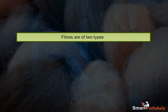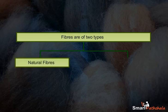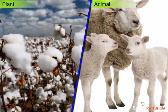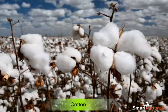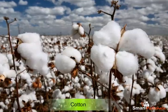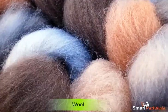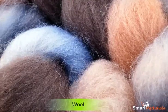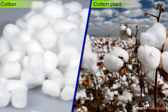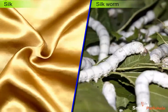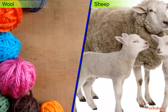Generally, fibers are of two types: natural fibers and synthetic fibers. Natural fibers are prepared from plant and animal sources. Cotton, silk, and wool are the examples of natural fibers. We get cotton from the cotton plant, silk from the cocoons of a silkworm, and wool from sheep.